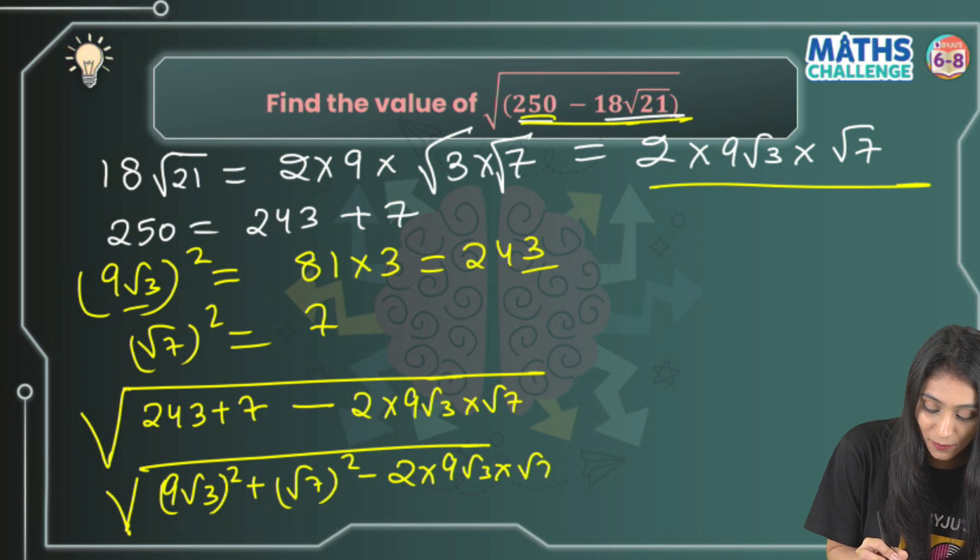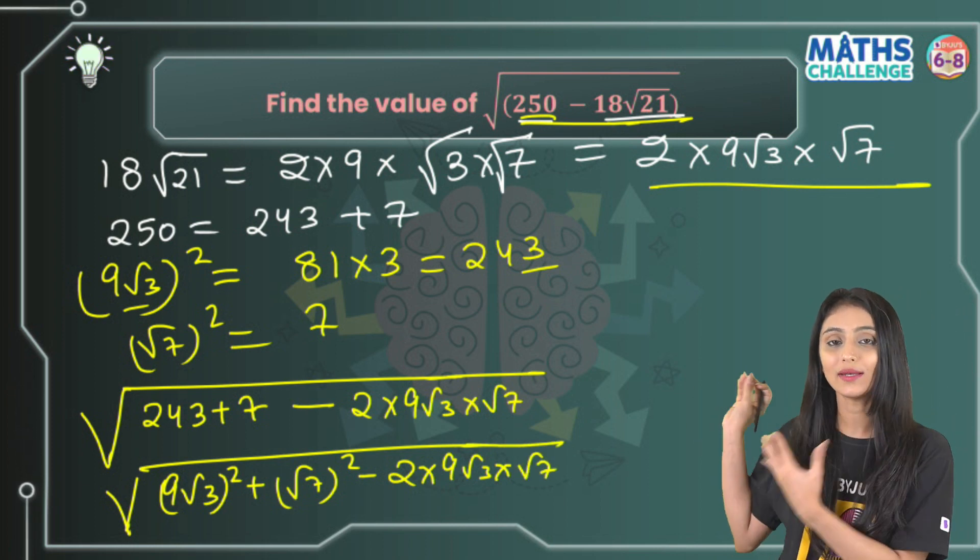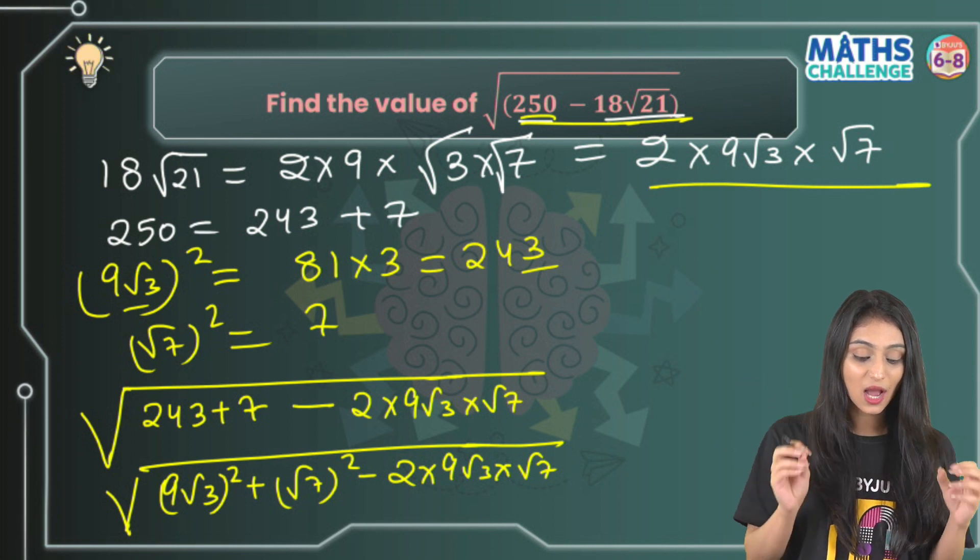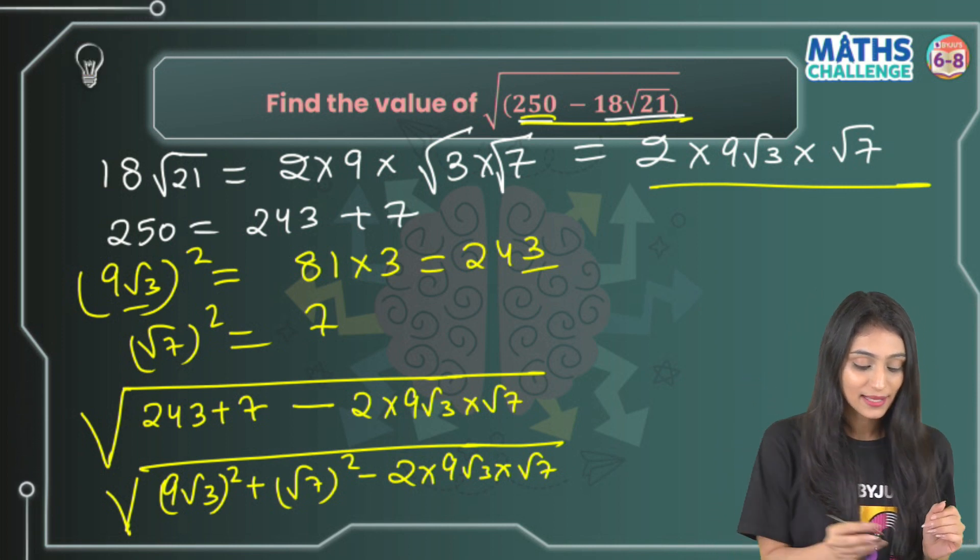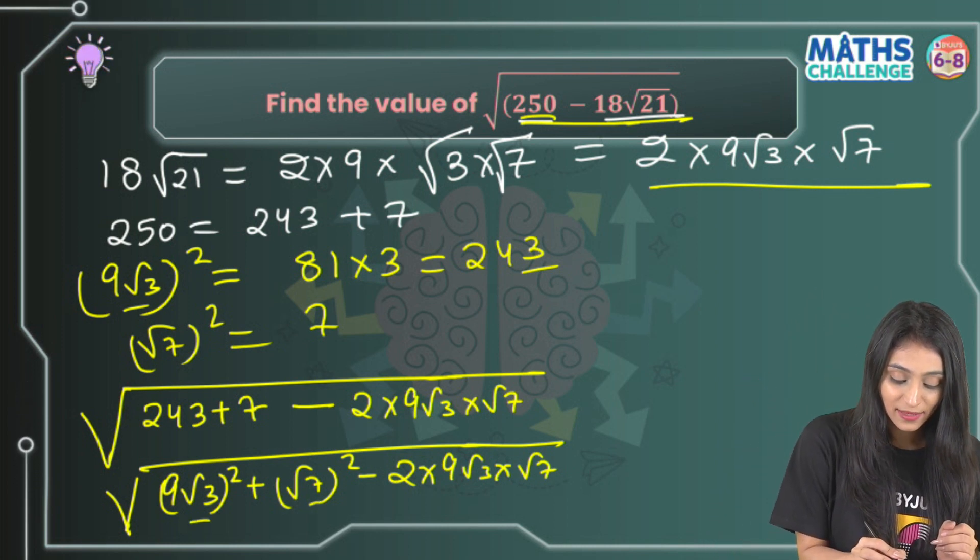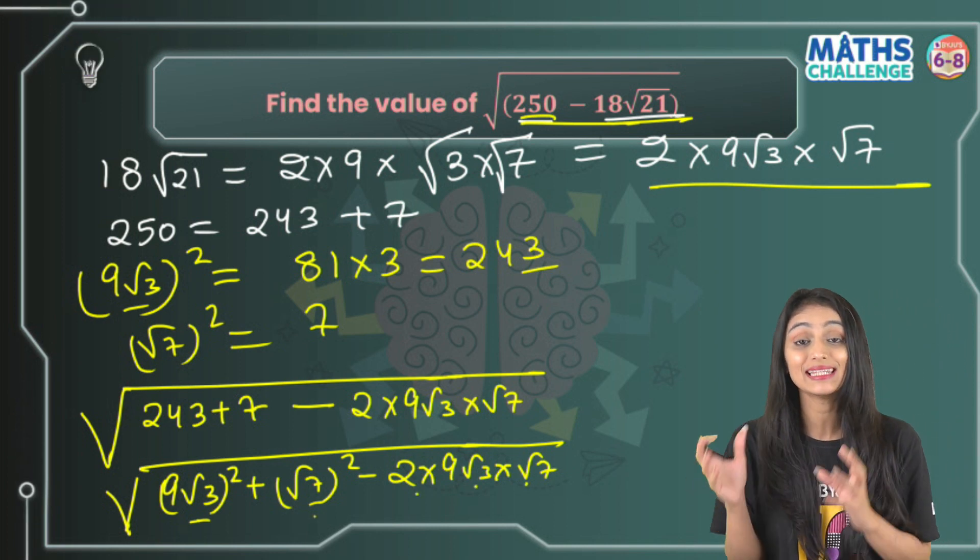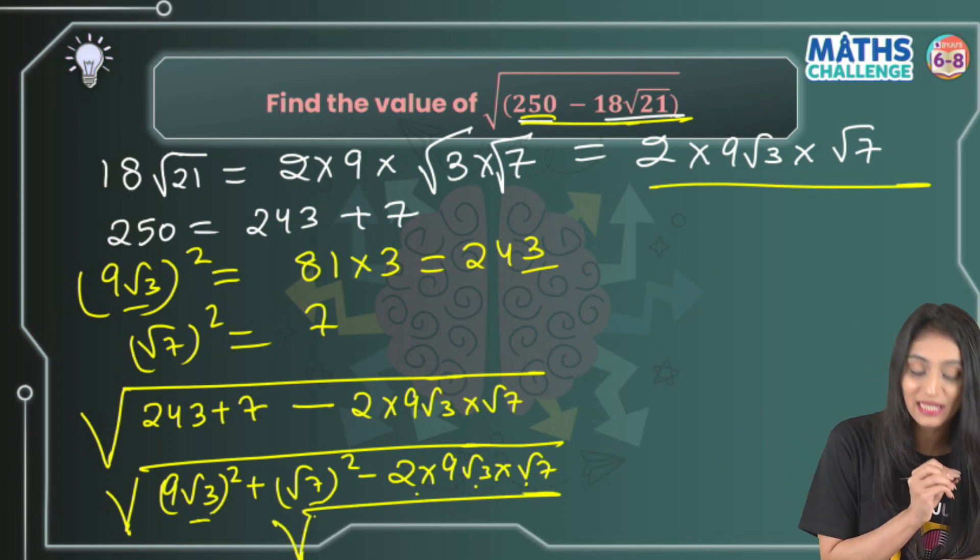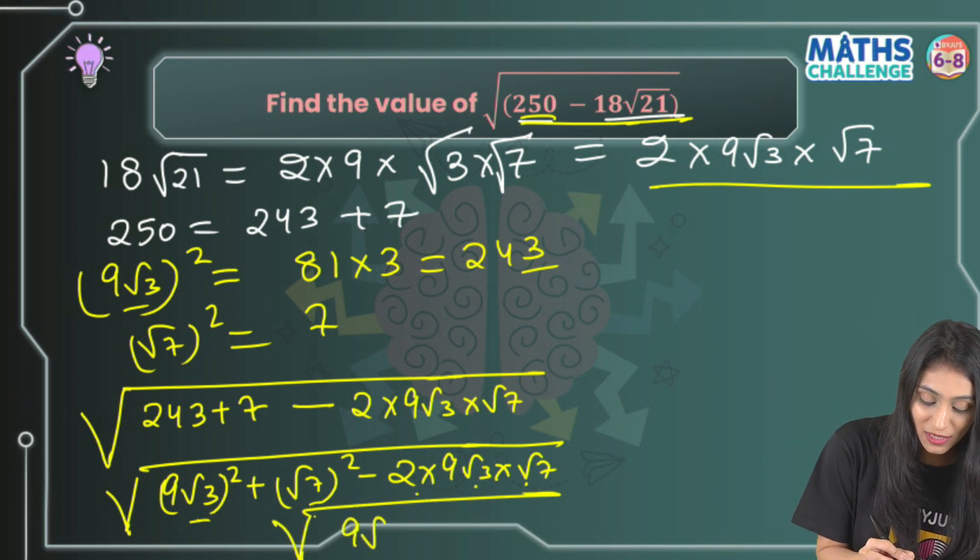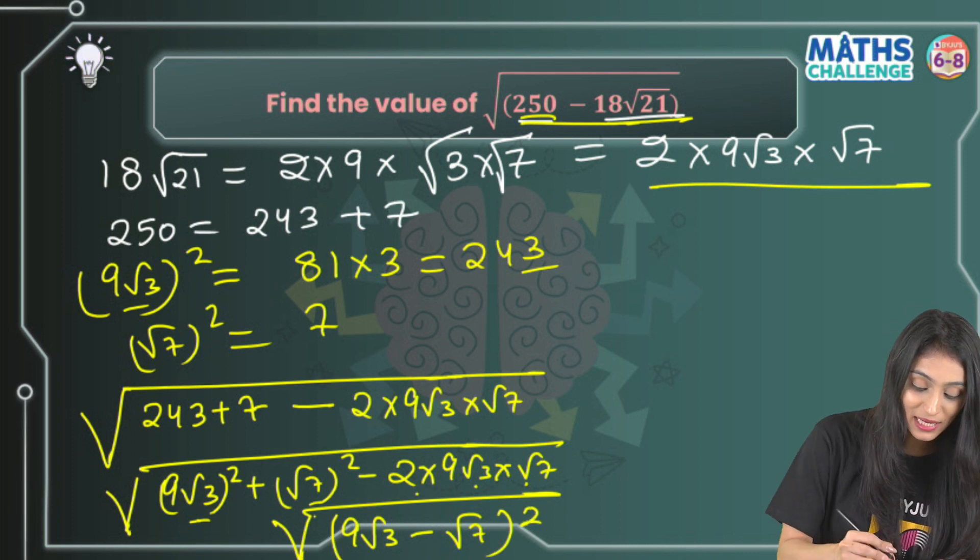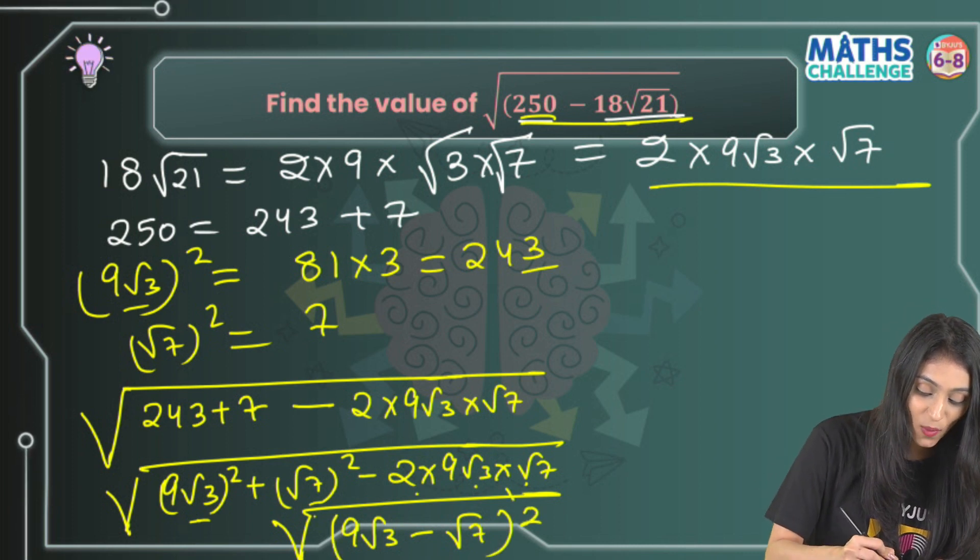Are you able to understand what the next step is? This is very simple because now we can see an identity is formed. This is a, this is b, and this is 2ab. So that's a² + b² - 2ab, which is (a - b)². I'll simply keep the root as it is, and this is (9√3 - √7)². The square and root get cancelled out, and we are finally left with 9√3 - √7. That's our final result.